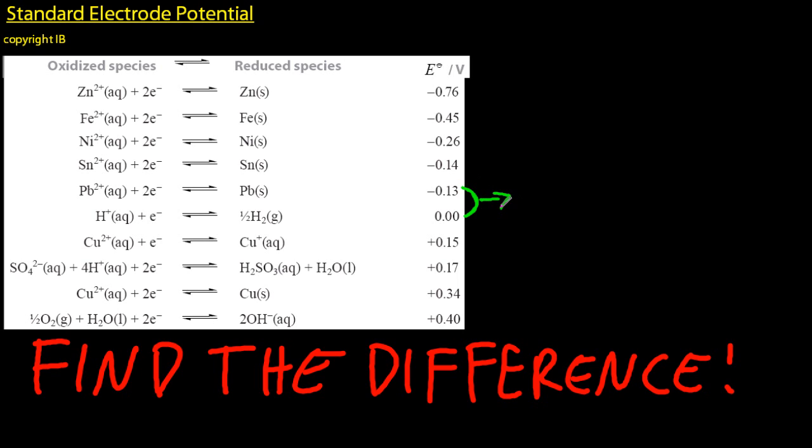Now, what about those two? I see one electron and two electrons. Do I have to double something or half something? No, never, ever, ever.